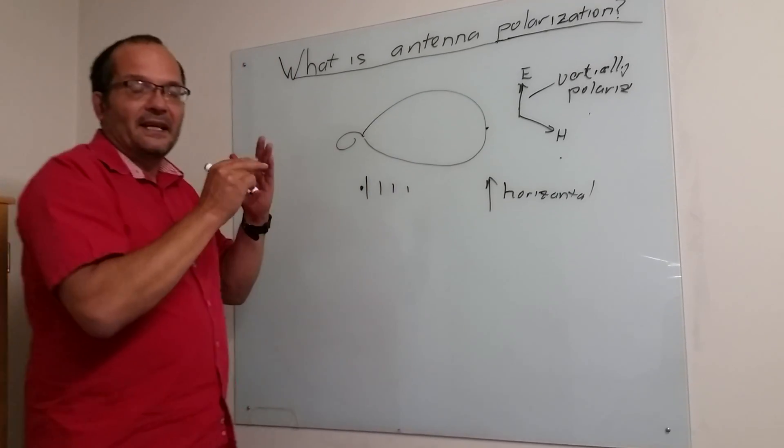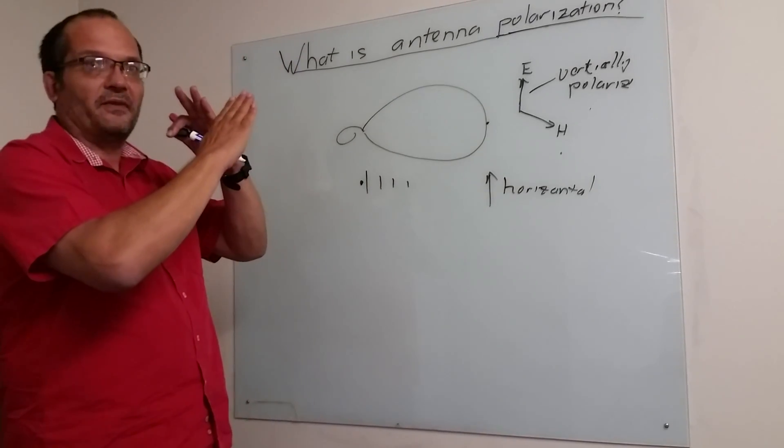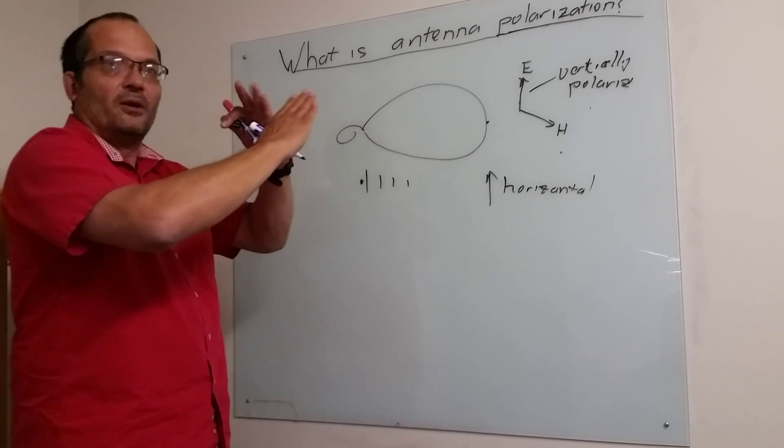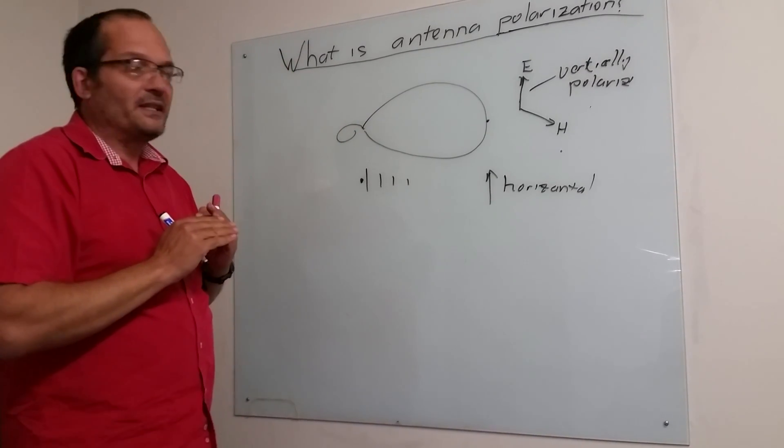In many cases, base stations actually have, for example, plus 45, minus 45. So they transmit one signal this way, one this way, in which case most antennas will receive it.